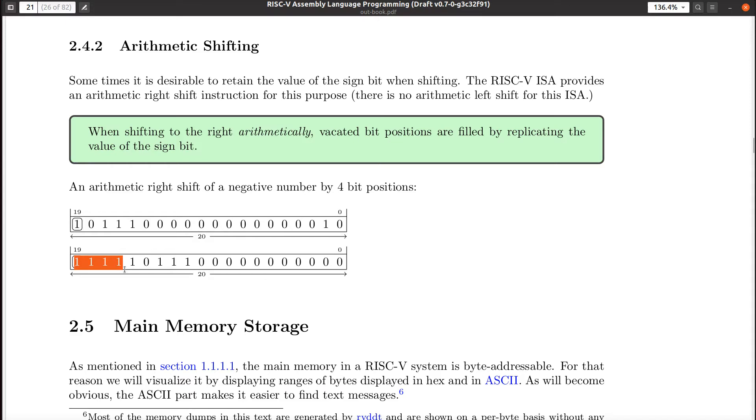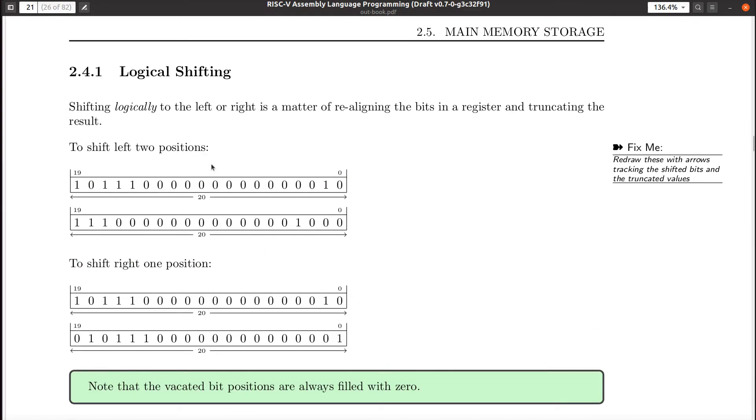Okay? So this bit here is replicated and used to fill in the vacated positions over here. All right? In an arithmetic shift. In a logical shift, when you're shifting to the right, all the vacated bits get filled with zeros, no matter what was over here.